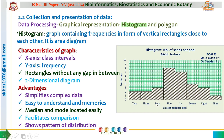Histogram facilitates comparison between different classes. For example, classes one and two may have equal frequency, while class four may have the maximum frequency compared to all others. It also shows the pattern of distribution of data — whether the data falls towards the center, left-hand, or right-hand side. When data is concentrated in the center it is called normal distribution; when concentrated on one side it is called skewed data.